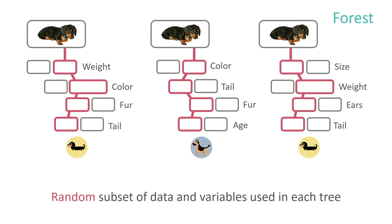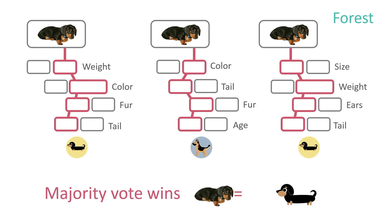Random forest works with an ensemble of decision trees — hence the name 'forest.' Each tree receives a random subset of the training data and a subset of variables. One tree might correctly identify a dachshund using weight, color, fur, and tail. Another tree might start by splitting on color, which may not be a useful predictor for breed, and get it wrong. Individually these trees may be weak predictors, but random forest uses a majority vote concept: all trees vote on the outcome, and the majority vote builds a strong predictor out of several weak ones.